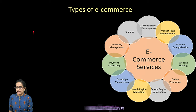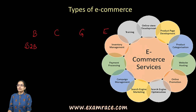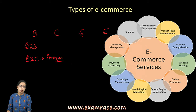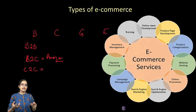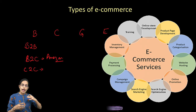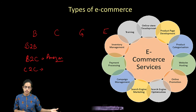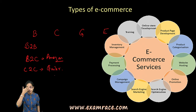For common e-commerce classification, we have three main entities: the business, the customers, and the government, with employees also included. B2B is business to business; B2C is business to consumer — a good example is Amazon or Flipkart. C2C is consumer to consumer — for example, when a customer wants to sell a secondhand or used product to another customer. Craigslist and Quikr are common examples of C2C platforms.